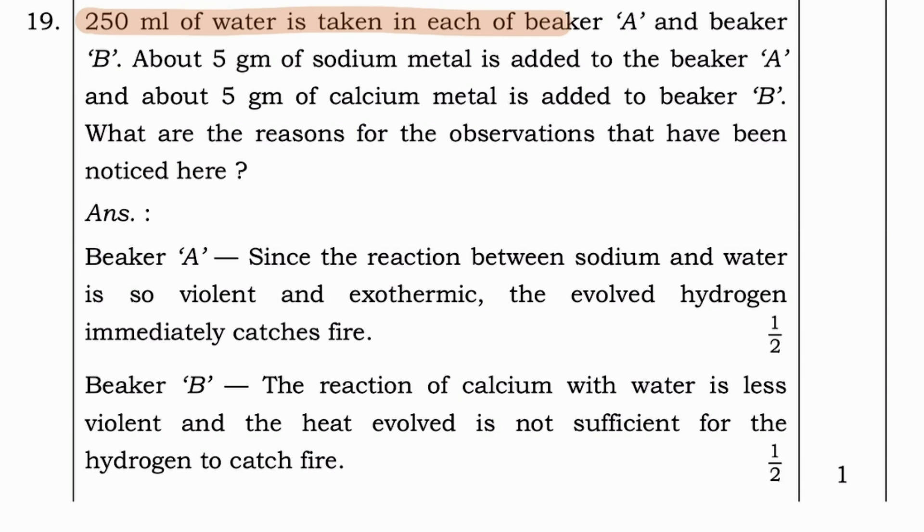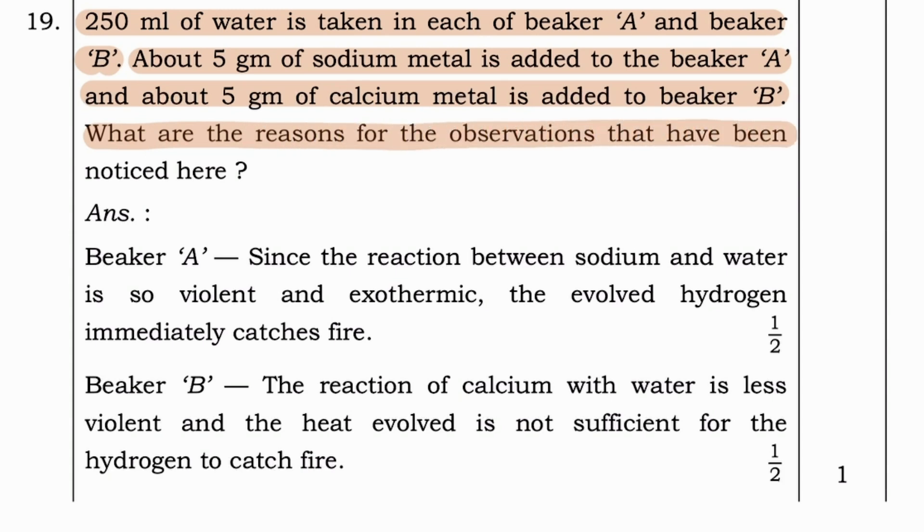Next question. 250 ml of water is taken in each of beaker A and beaker B. About 5 g of sodium metal is added to beaker A and about 5 g of calcium metal is added to beaker B. What are the reasons for observations that have been noticed here? Answer is beaker A. Since the reaction between sodium and water is so violent and exothermic, the evolved hydrogen immediately catches fire. And in beaker B, the reaction of calcium with water is less violent. And the heat evolved is not sufficient for the hydrogen to catch fire.